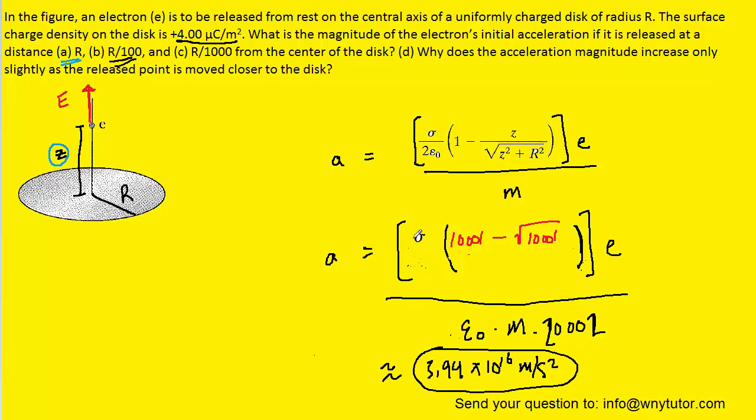Don't forget that for sigma, the charge density, you need to multiply by 10 to the minus 6, so it was actually 4.0 times 10 to the minus 6.